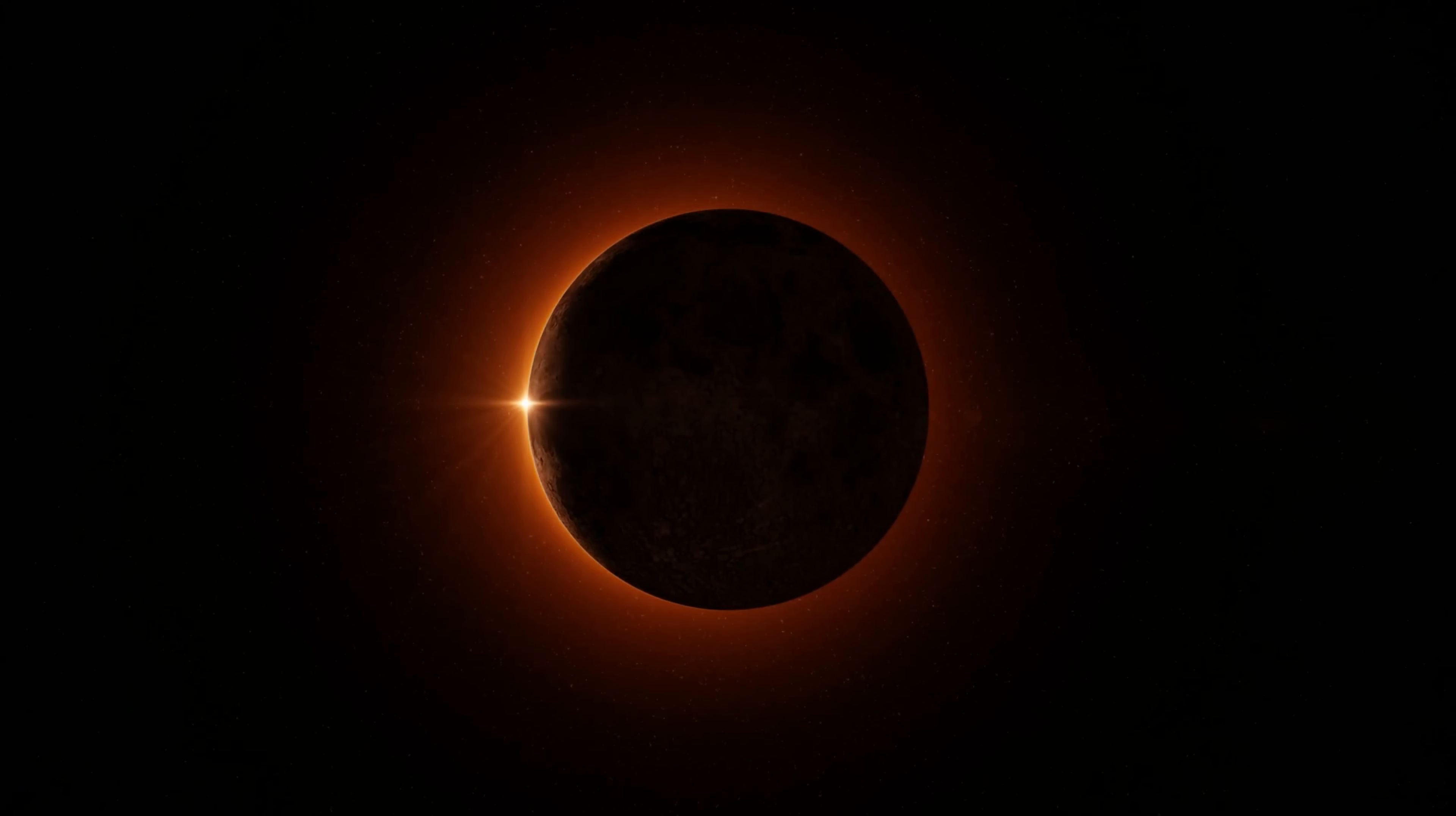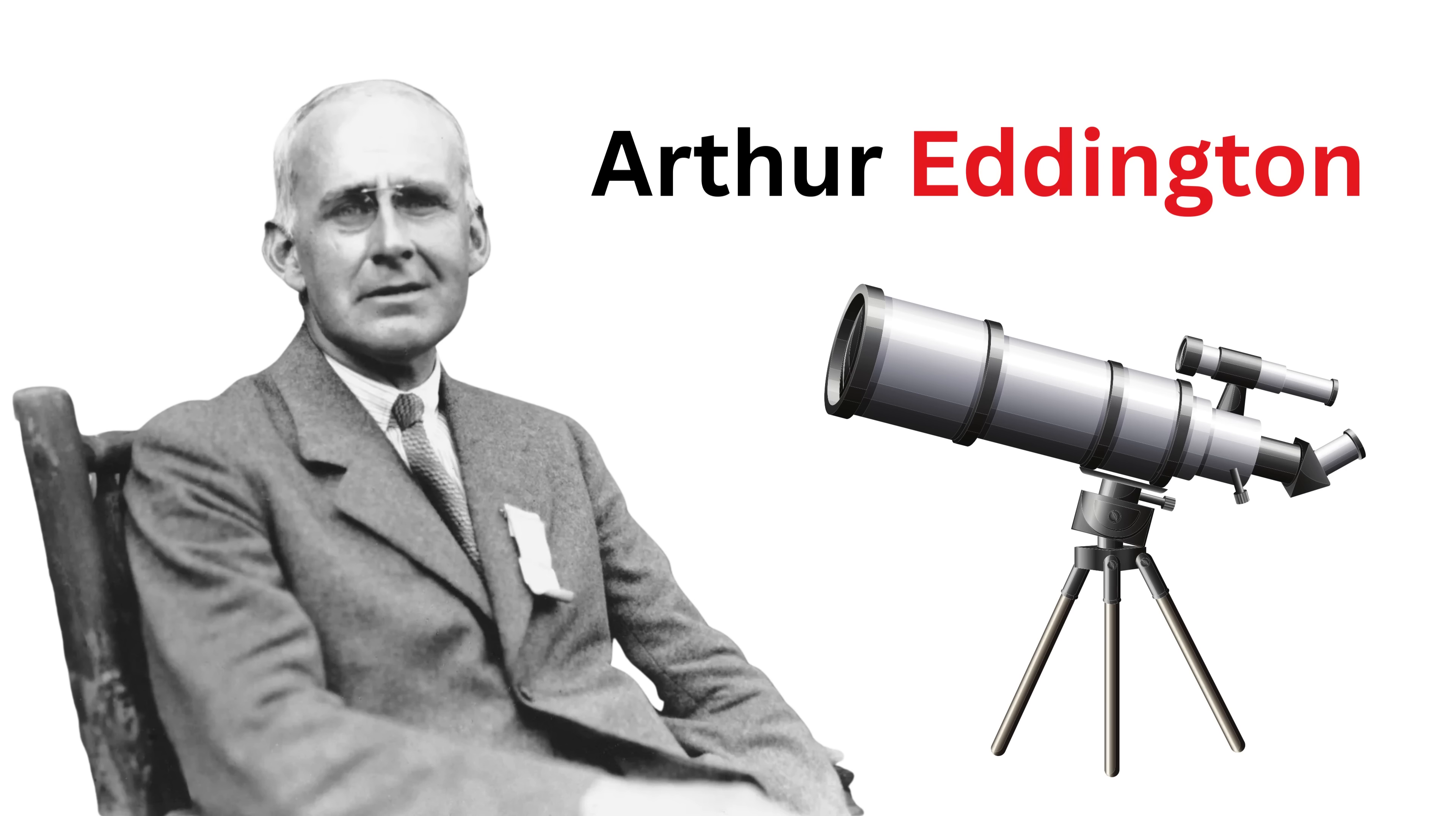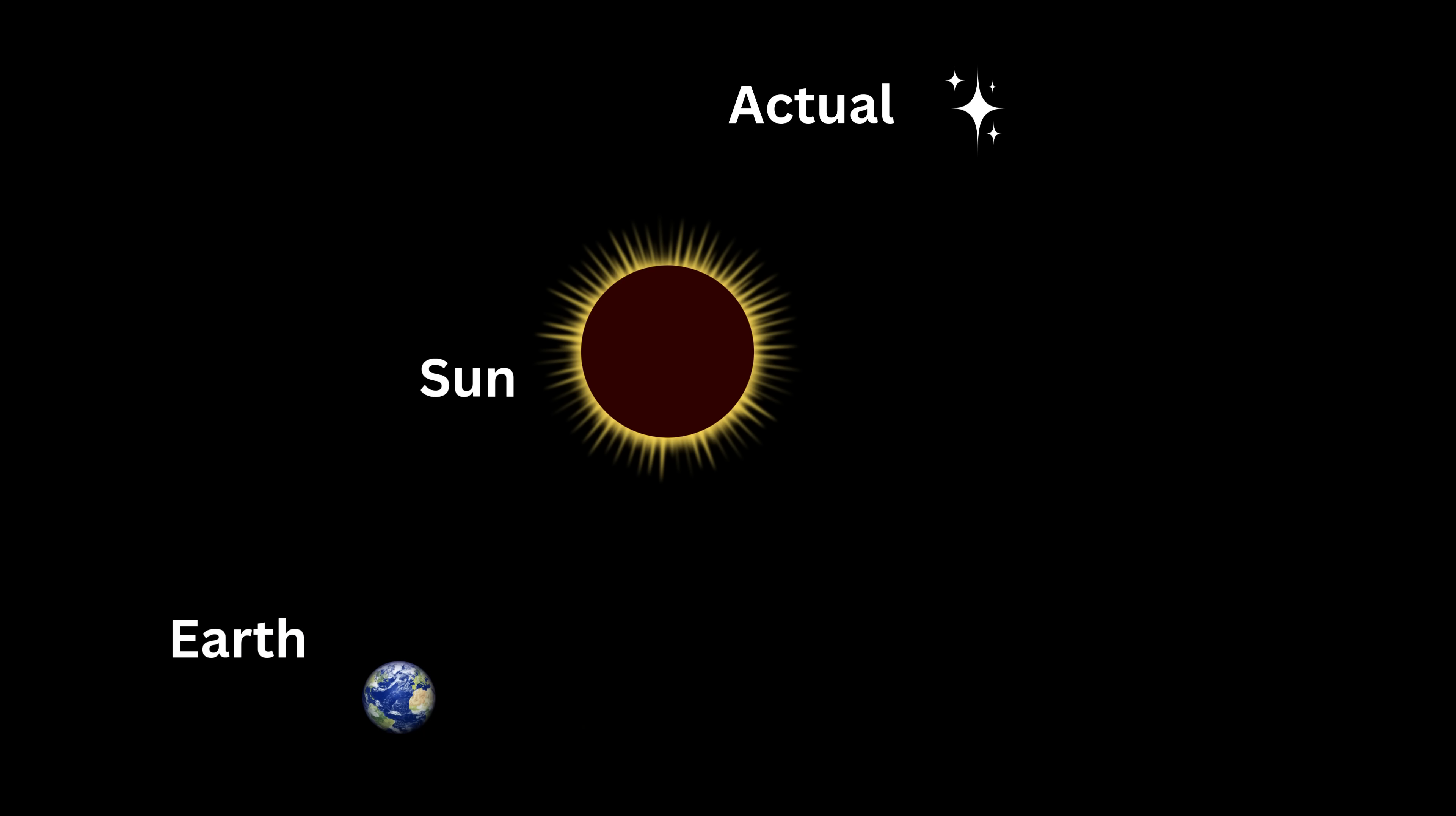That proof came in the year 1919, during a total solar eclipse. A British astronomer named Arthur Eddington led an expedition to test one of Einstein's bold predictions. He aimed to photograph stars that appeared close to the sun in the sky. Under normal conditions, the sun's bright light would wash out the view. But during a solar eclipse, the sun's light is blocked, and the background stars become visible for a brief moment.